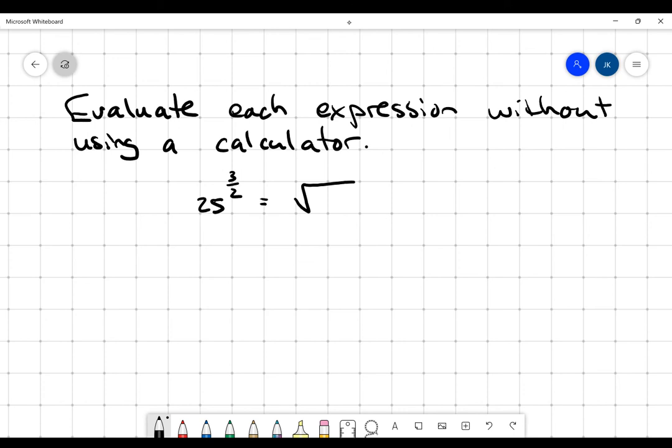the denominator gives me the root index. So that 2 in the denominator tells me that this is a square root. And then I'm going to raise the whole thing to that exponent, to 3.